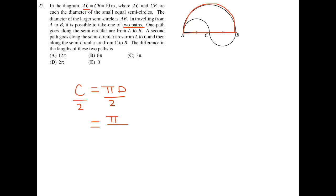So AC and CB are 10. So the full AB is 20. So therefore, this is 10 pi. Alright? So that first path that basically goes along from here to here is 10 pi. So now we have to figure out the second path, path number two, which is going from A to C, and then going from C to B. What is that one?